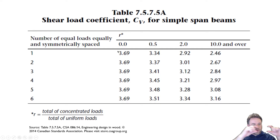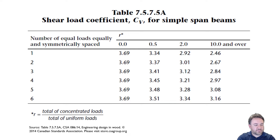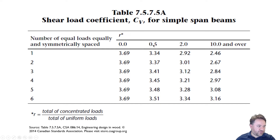For example, say I have a uniform load of 10 kilonewtons per meter over two meters, so my total uniform load is 20 kilonewtons, and a point load of 10 kilonewtons. I can find R, which is the total concentrated loads divided by the total uniform load — so 10 divided by 20 gives R equals 0.5. For R equals 0.5 with one equal load, my CV is going to be 3.34.